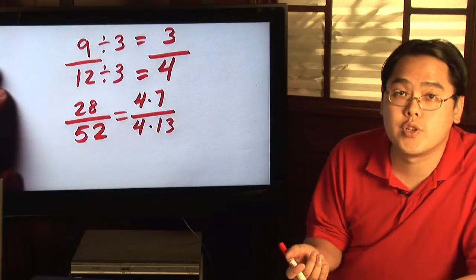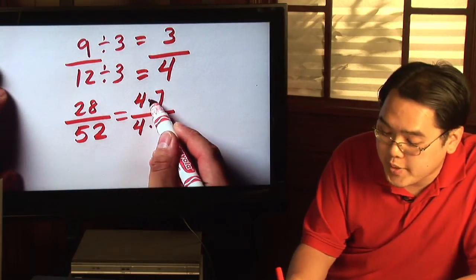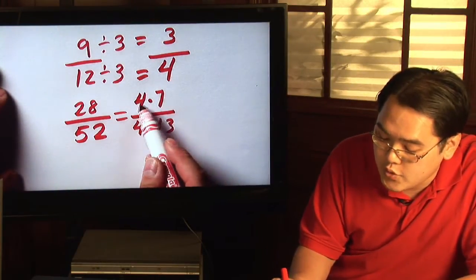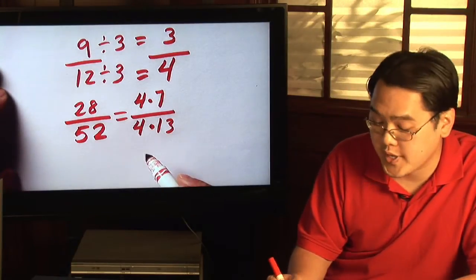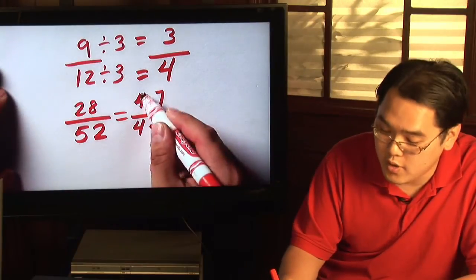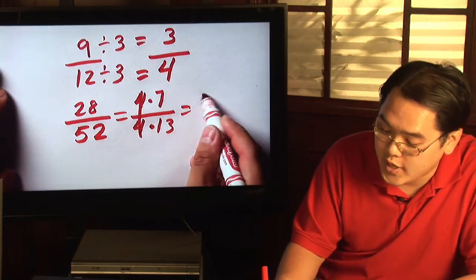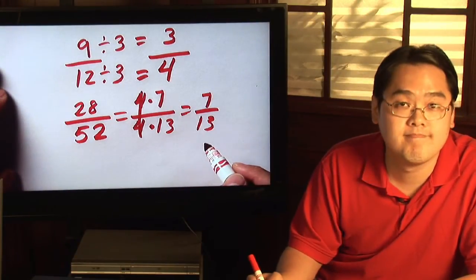Now this is another approach to reduce fractions because under the multiplication rules, if two numbers are multiplied with each other at the top and bottom, you can cancel things out. Because both numbers are multiplied by 4, the 4s cancel and so you have 7 over 13.